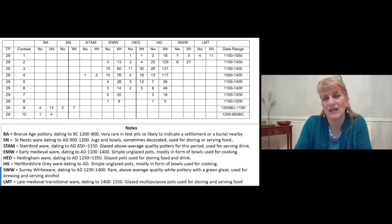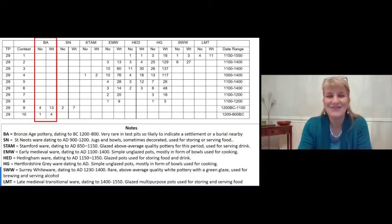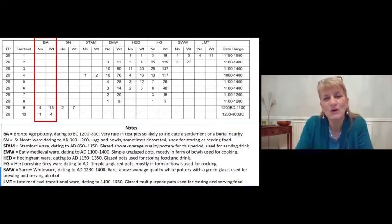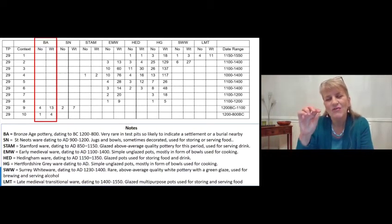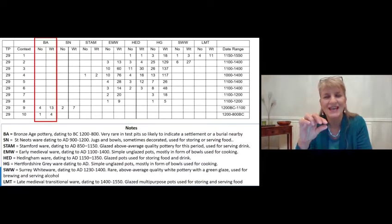The first category of finds is the pottery, which is usually quite common in test pits and always informative. We can see why the finds from this test pit fall into three main chronological groups, because there's Bronze Age pottery — outlined in red here — which only comes from the bottom two contexts: Context 9 and Context 10, at 90 and 100 centimetres below the surface.